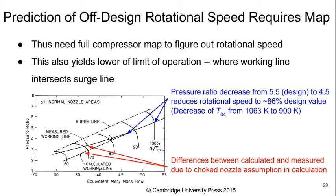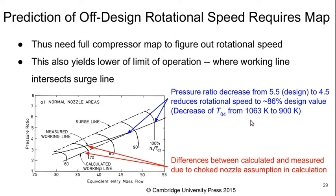The calculated working line is the partially dashed line — the bottom one. We see a deviation in the measured working line, which comes from the fact that we've used the choked nozzle assumption throughout in calculating this working line. We see the surge line, and the working line moves steadily towards the surge line — from a pressure ratio of about 5.5 down to 4.5. This reduces the rotational speed to about 86% of the design value, associated with a corresponding decrease of T0.4 from 1063 Kelvin to 900 Kelvin.